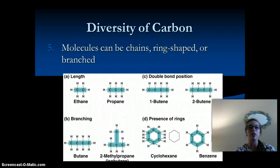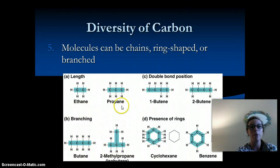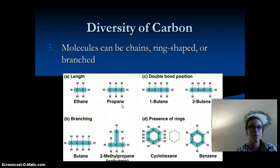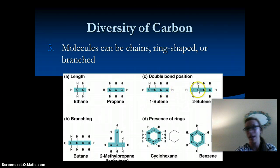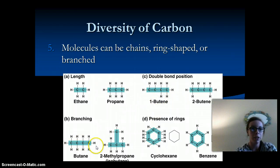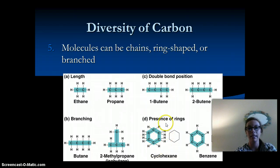These molecules can either make chains, rings, or be branched. The structure of the molecule is going to differ based on the bonding. Ethane and propane contain the same atoms, but it's just the number of carbons that differ. With butane and butane-2, it's the position of the bond or the double bond. Branching means having the same number of carbons but different branches, and rings form when a molecule folds in on itself.